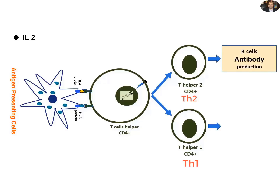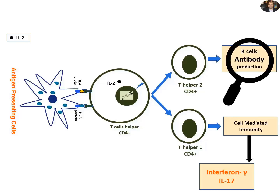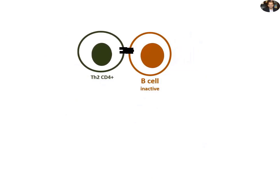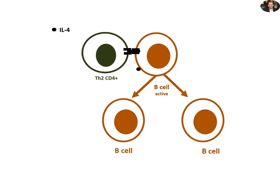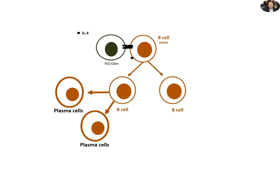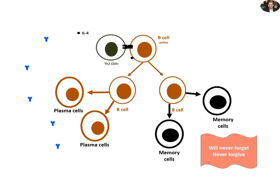The Th2 stimulate the production of various antibodies, whereas Th1 are directed towards cell-mediated immunity and later production of interferon gamma and IL-17. Once Th2 finds the B cells, it activates them. This activation results in the proliferation of B cells that produces two new cell lines: plasma cells and memory cells. Plasma cells produce various types of antibodies, whereas memory cells keep records of all foreign antigens in our body and provide long-lasting immunological memory.